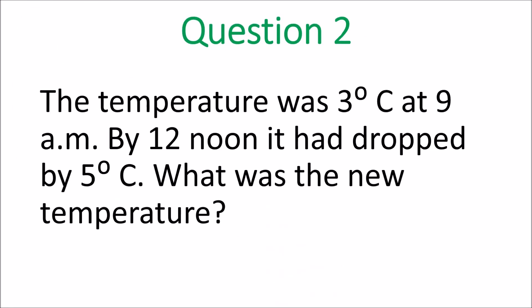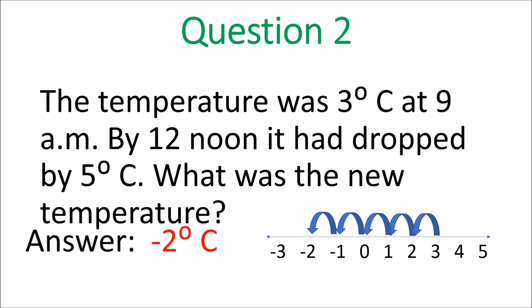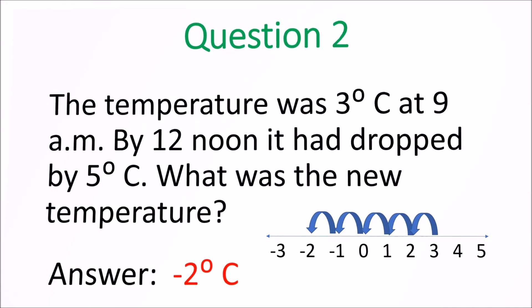That's your pictograph completed. Question two: the temperature was three degrees Celsius at 9 a.m. By 12 noon it dropped by five degrees Celsius. Draw a number line and go from three, moving five steps to the left — one, two, three, four, five. Where do you end up? Negative two. So the answer is negative two degrees Celsius.